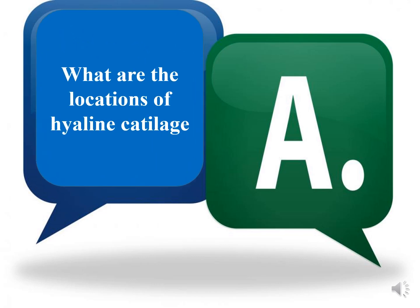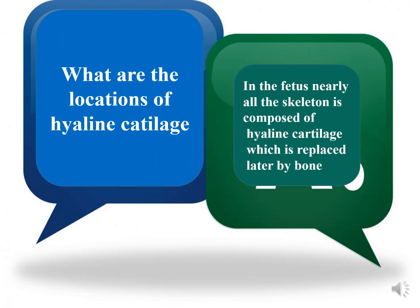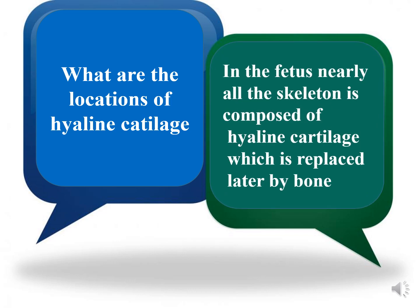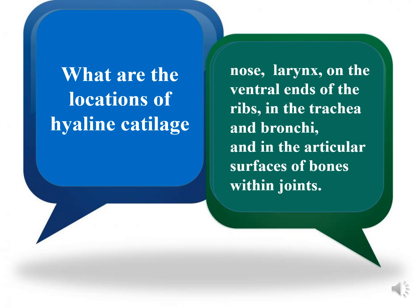The locations of hyaline cartilage: in the fetus, nearly all of the skeleton is composed of hyaline cartilage, which is later replaced by bone. In the adult, it is found in the nose, larynx, on the ventral ends of the ribs, in the trachea and bronchi, and on the articular surfaces of bones within joints.